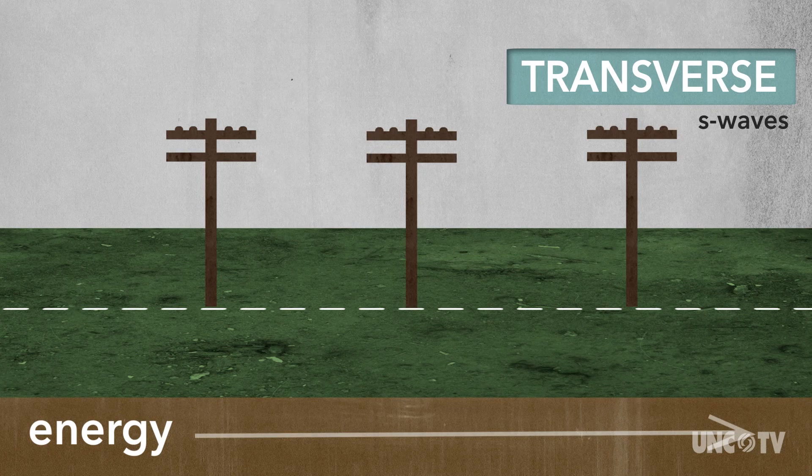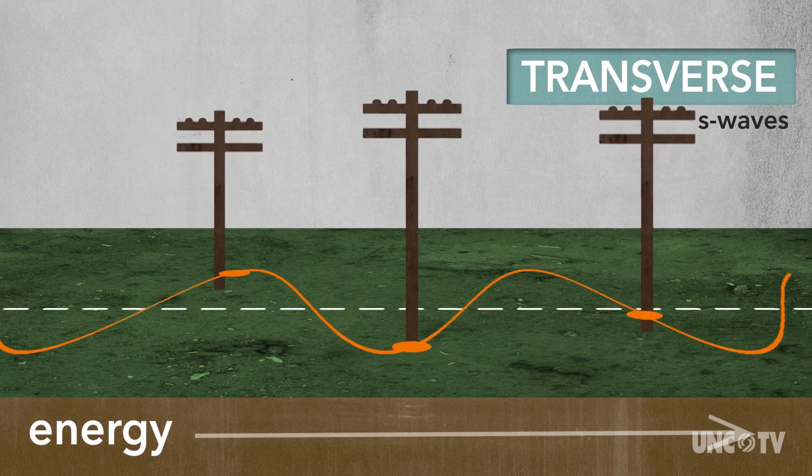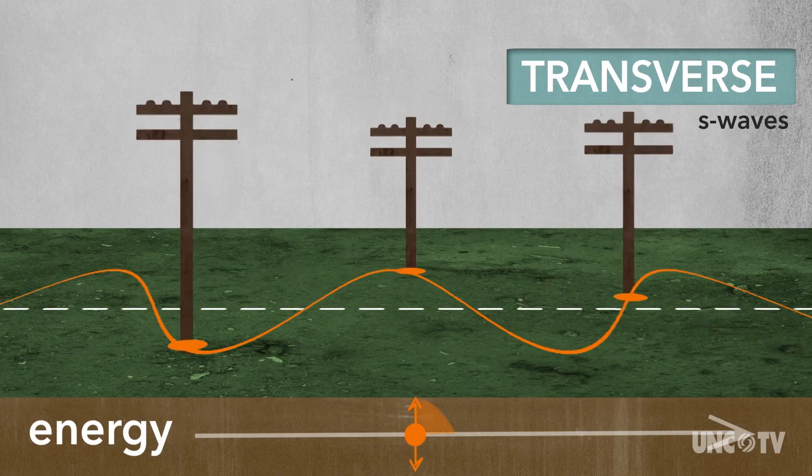Transverse waves, or S waves, transfer energy by moving the medium back and forth at a right angle to the energy movement.